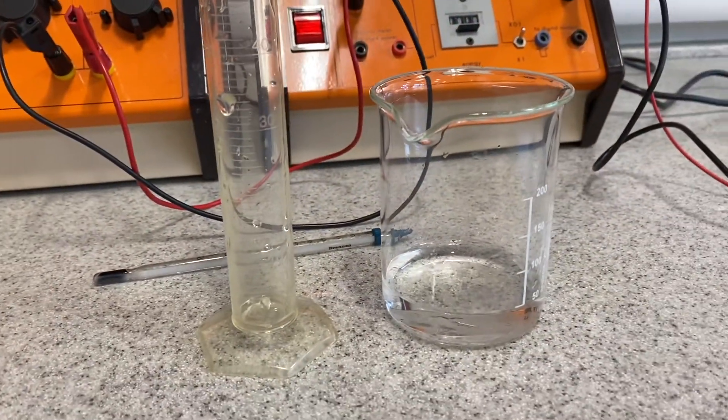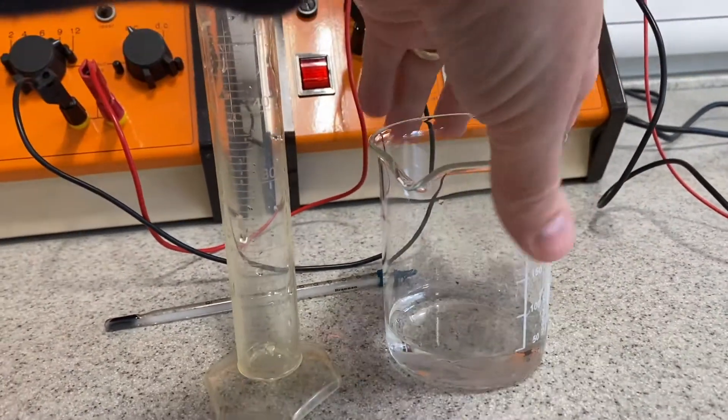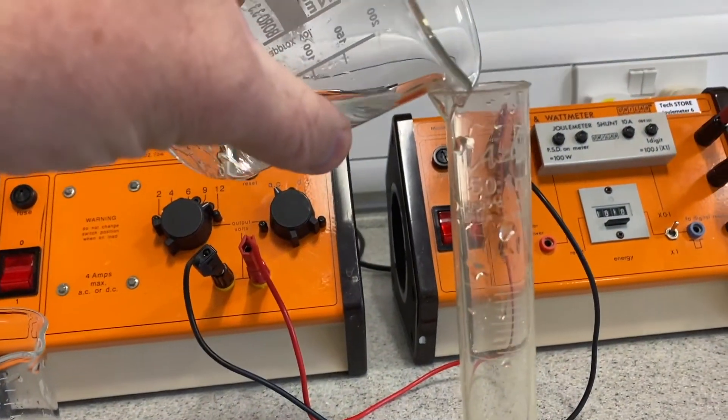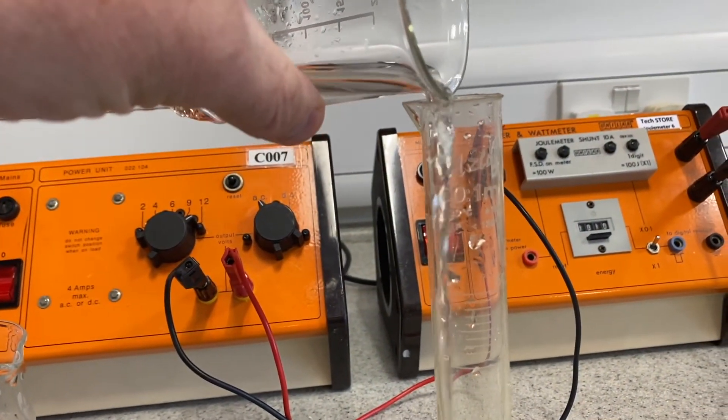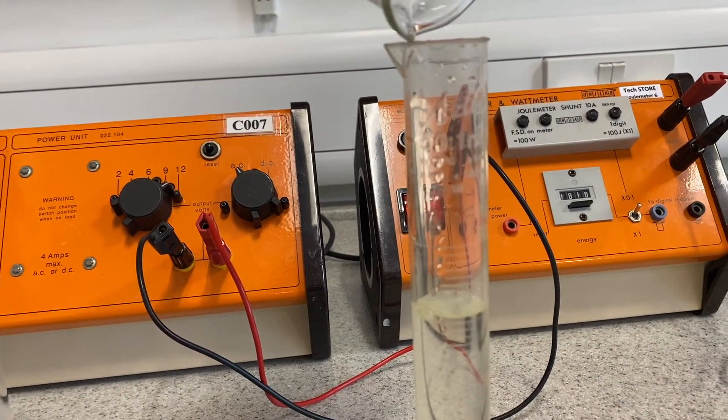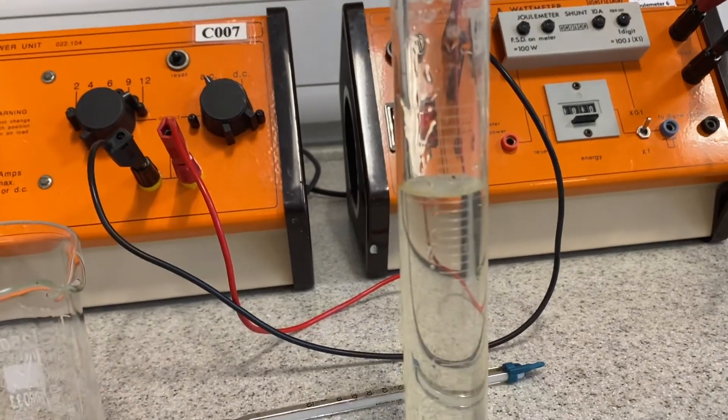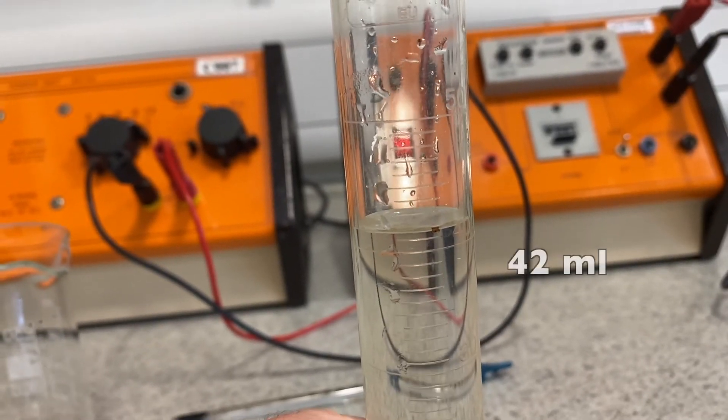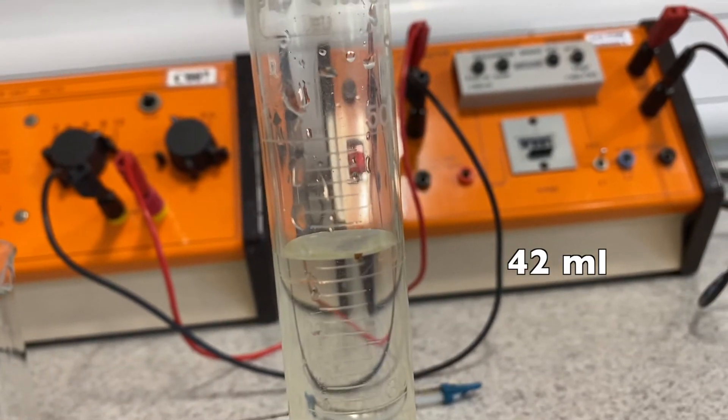And here is the one that the heater melted. Remember, we supplied the water with 10,000 joules. There it is, 42.